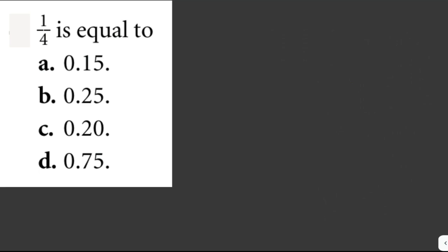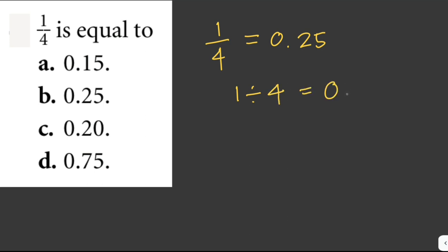One-fourth equals what as a decimal? One-fourth is a fraction, and to convert a fraction into a decimal we just divide the numerator by the denominator. In this case, one-fourth is easy — almost everyone knows that one-fourth is equivalent to 0.25. You just divide the numerator, which is 1, by the denominator, which is 4.